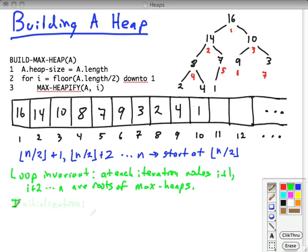So initialization. The initialization is true because of this fact up here that I referenced previously, that the nodes starting from n over 2 plus 1, n over 2 plus 2 up to n are already leaves of the tree. Therefore, the leaves are trivial max heaps. Since we're starting at n over 2, all these other ones have already been taken care of. So when i equals n over 2, i plus 1, i plus 2 corresponds to these things.